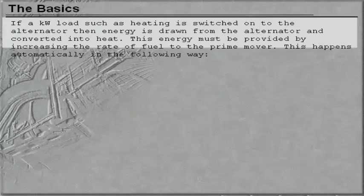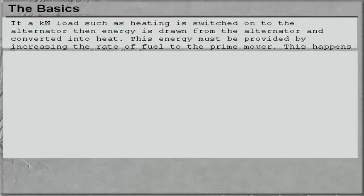If a kilowatt load, such as heating, is switched on to the alternator, then energy is drawn from the alternator and converted into heat. This energy must be provided by increasing the rate of fuel to the prime mover.